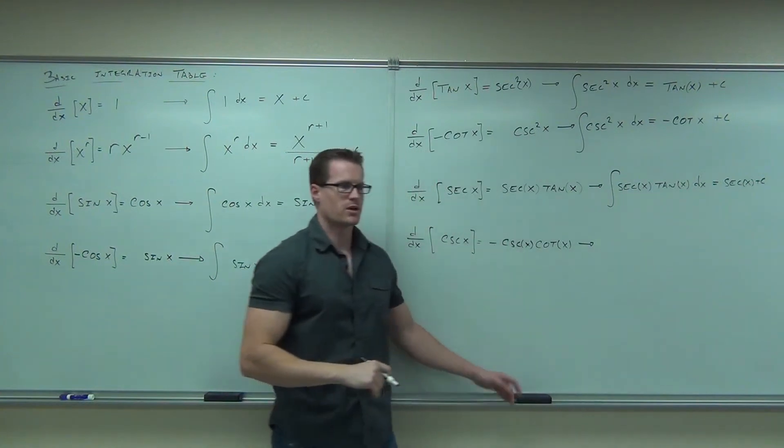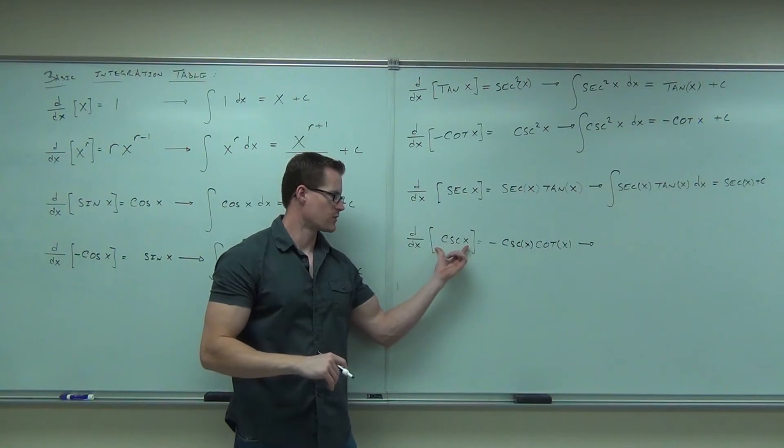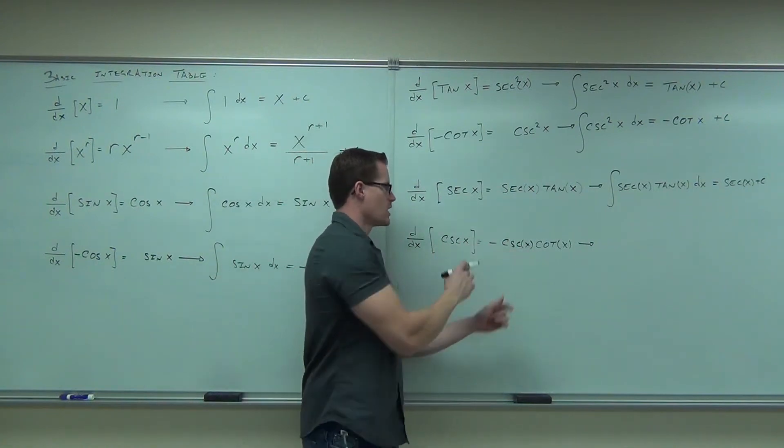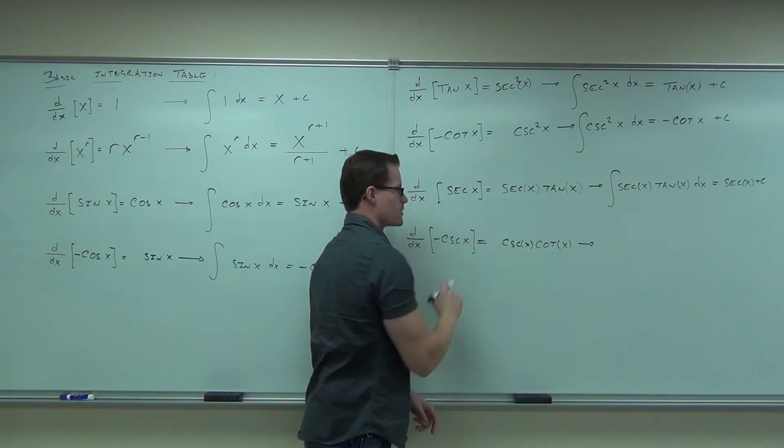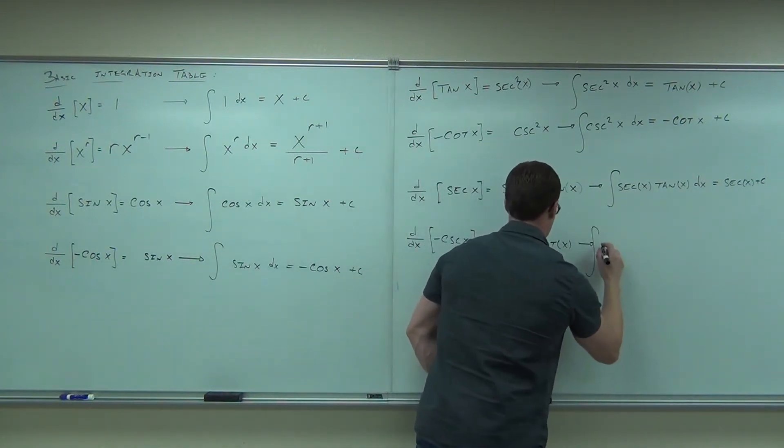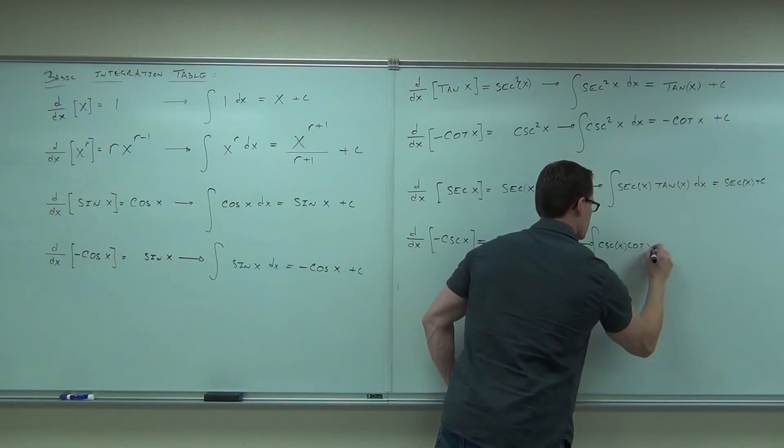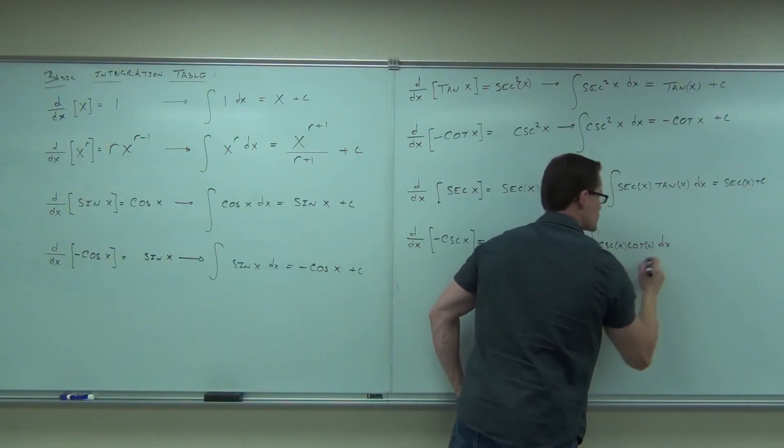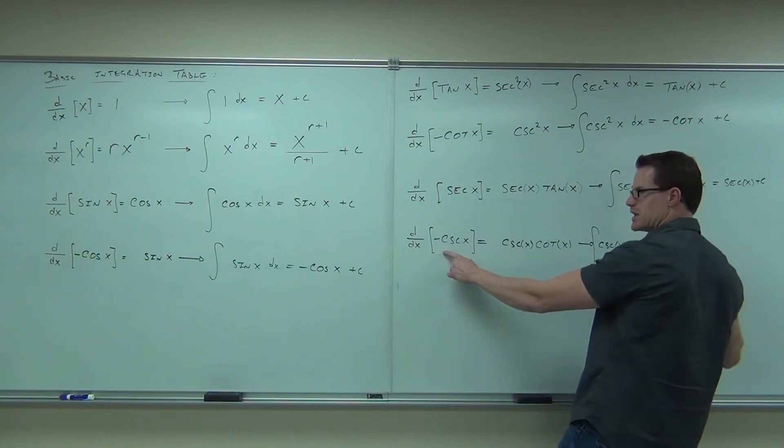You also probably know what I'm going to do with this one. I don't want that negative there. I want the negative here. So if the derivative of cosecant gives you negative cosecant cotangent, then the derivative of negative cosecant gives you positive cosecant cotangent. So I'm going to change that around. That way I have the integral of cosecant x cotangent x, dx, don't forget the dx, is negative cosecant x plus c.